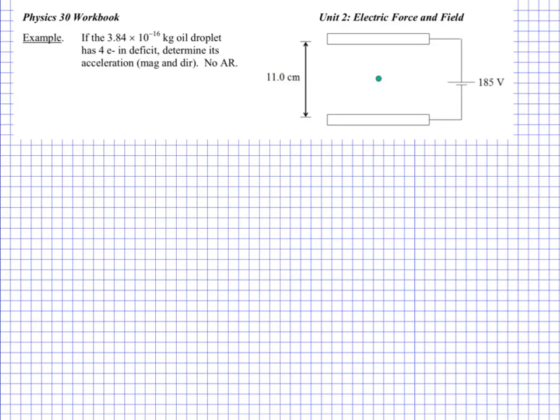All right, so example number two, here we have a similar situation. We have an oil drop, we know the mass of the oil drop. This time, rather than working out the number of electrons on the oil drop, or the number of excess or deficit electrons on the oil drop, we're actually told that information. So we are told that it has a four elementary charge deficit. And now we need to figure out the acceleration, assuming that there's no air resistance.